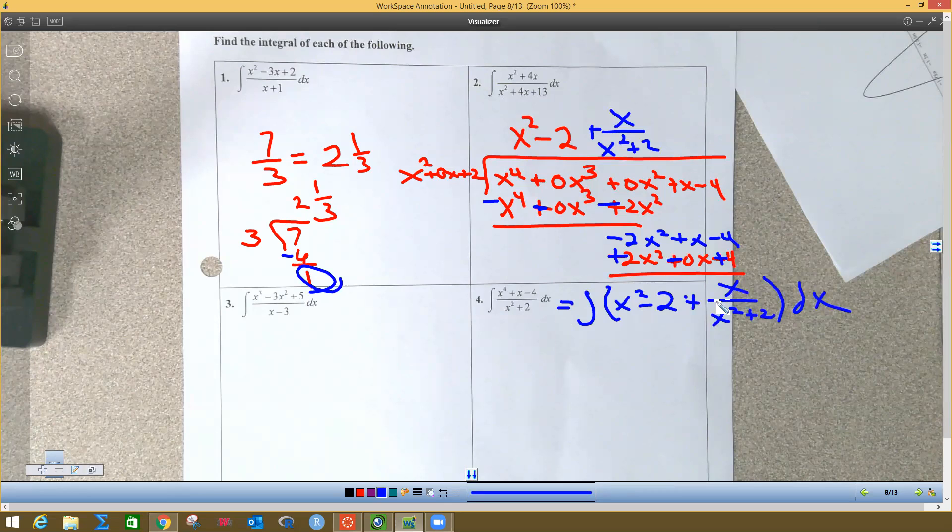So then you're going to do the integral of each part individually. The x squared is going to be x cubed over three from the power rule. The negative two becomes negative two x from the power rule. And then this part is different.